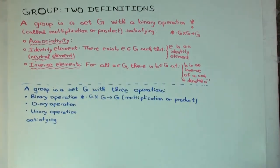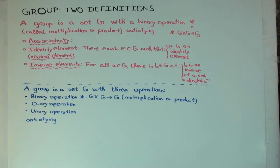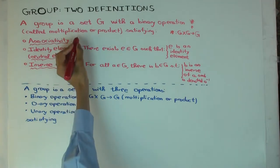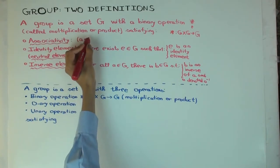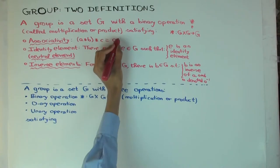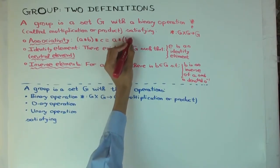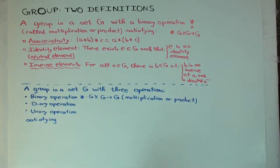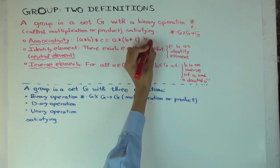A group is a set with a binary operation which satisfies three conditions. The first condition is associativity. For all a, b, c in G: a star (b star c) equals (a star b) star c. It's universal — that's what associativity is.